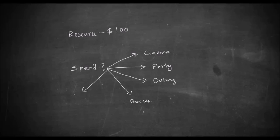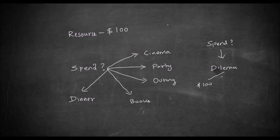You have many possibilities for spending this hundred dollars, but the question is on which of these items will you spend it? This leads to a dilemma, because you have only a hundred dollars but five options in front of you. The constraint is you cannot spend on all of them — if you wanted to spend on all, you would need more than a hundred dollars, say two hundred and fifty dollars.